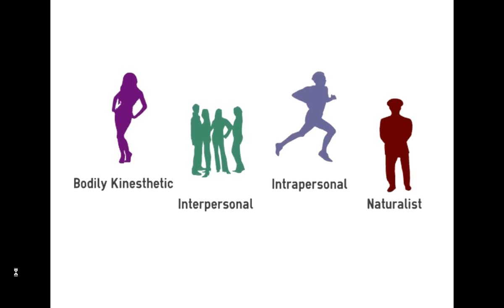The next one is interpersonal intelligence — a teacher might be a good example. This involves understanding how to communicate with other people and how to work collaboratively. Then there is intrapersonal intelligence, which is quite different. This involves understanding your inner world — what's going on inside you — your emotions and your thoughts, and having an ability to control them consciously. Finally, we have naturalist intelligence; an anthropologist or a geologist might be examples. This is someone who has a good understanding of and can interact with the natural environment.